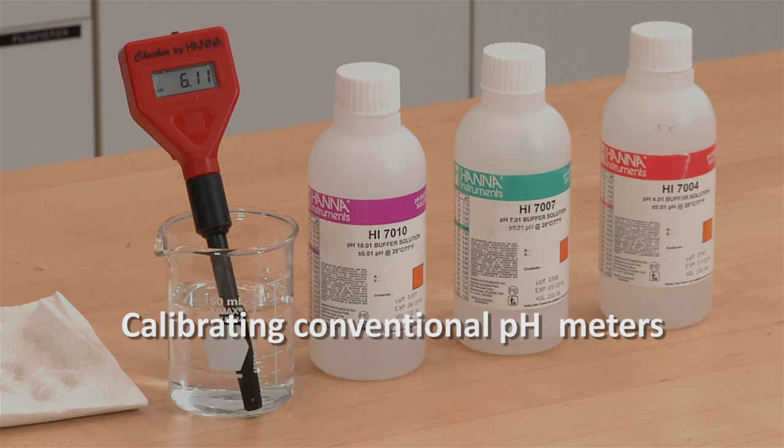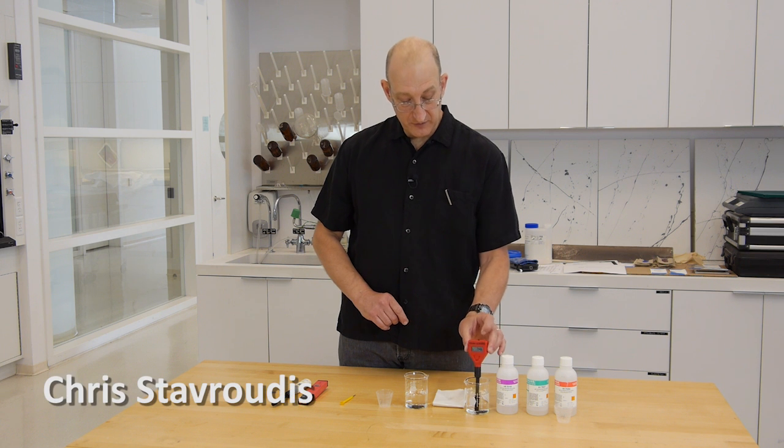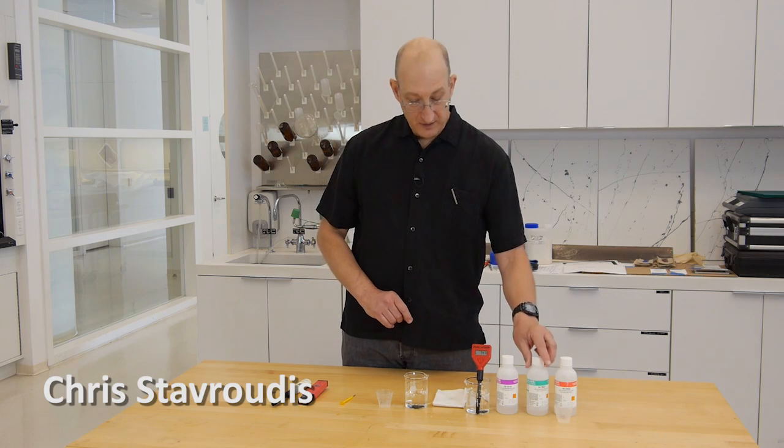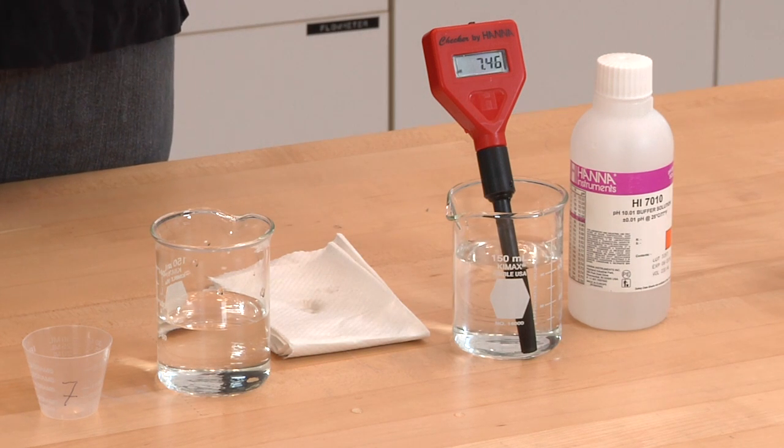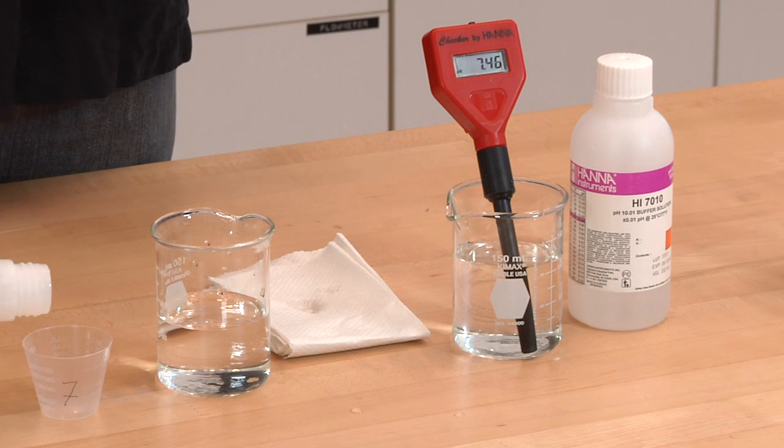To calibrate a conventional pH meter, we want to turn the meter on with a little switch here. Get our buffer solution. We're going to calibrate first to pH 7.